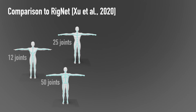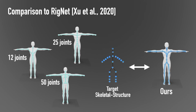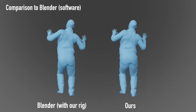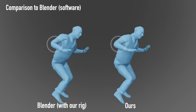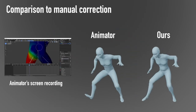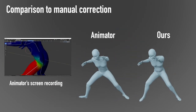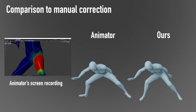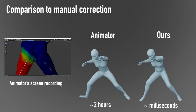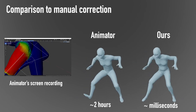We compare our method to RigNet, which outputs an arbitrary skeletal structure, so it is not directly possible to animate the output skeleton with mocap data. Here we compare our results to Blender's automatic skinning functionality — our fully automatic approach outperforms Blender's deformation quality. We asked an animator to manually correct the automatic deformation produced by Blender; it took them a significant amount of time to reach comparable deformation quality, which our network achieves with a single feed-forward pass.